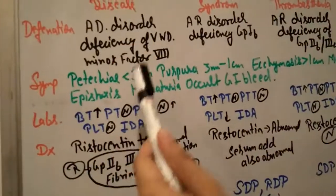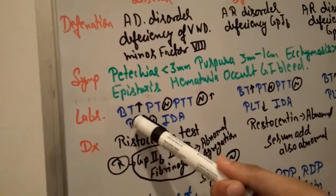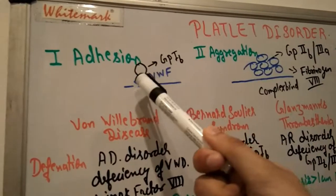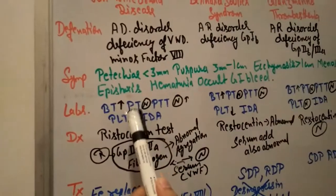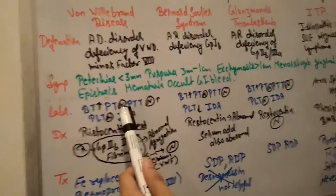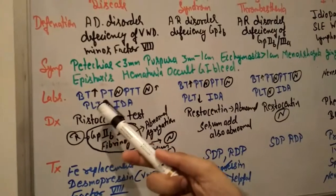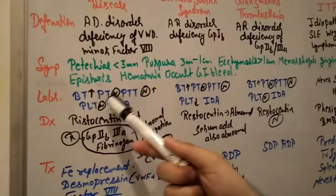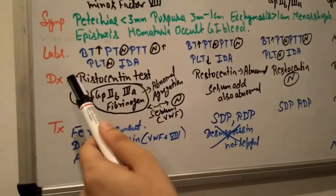For von Willebrand disease, the laboratory data shows bleeding time increased because there is excess bleeding. They can't stop bleeding due to von Willebrand factor deficiency and inability to bind together. PT and PTT are normal because these are for factors. Platelet is also normal; there's no defect in platelets. There's a defect in von Willebrand factor, and sometimes iron deficiency anemia due to blood loss.